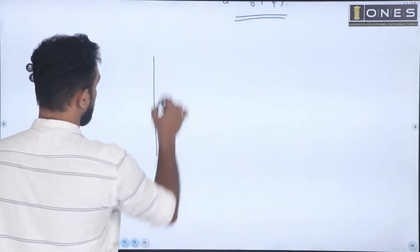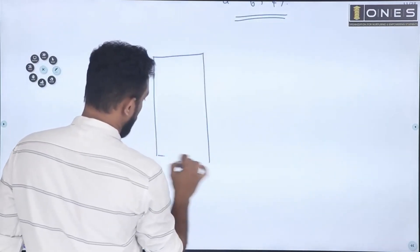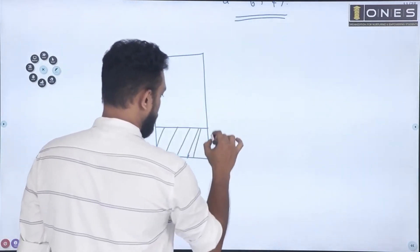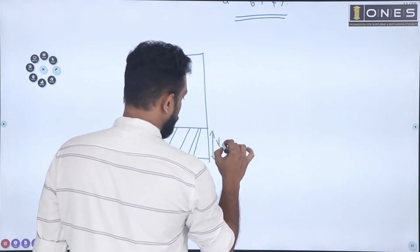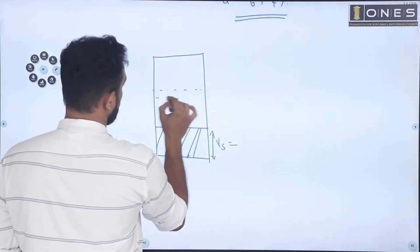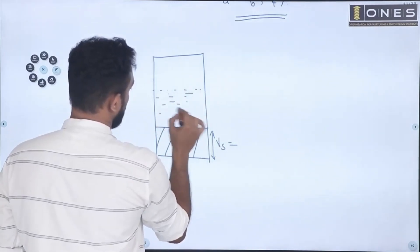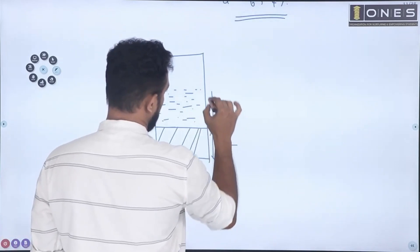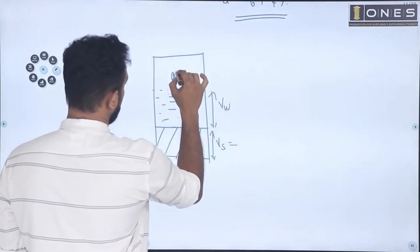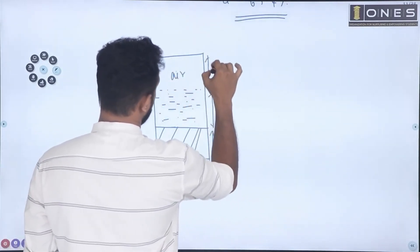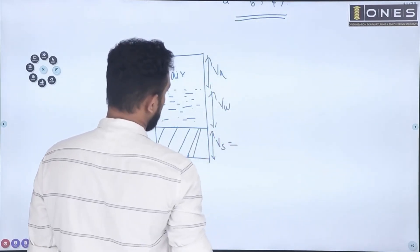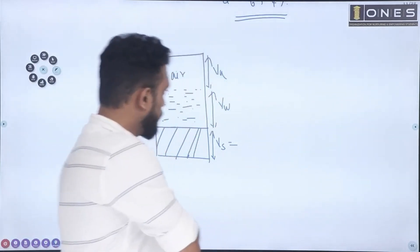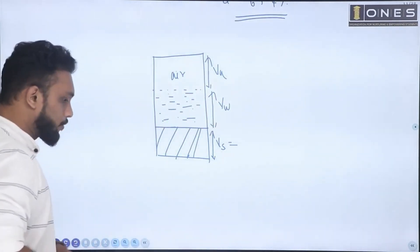Now how do you draw the phase diagram? We draw a diagram showing volume on one side and weight on the other. This portion is the volume of solids, this portion is volume of water, and there is air at the top. You label Vs, Vw, Va separately. We need to find those values. Total volume is 1 meter cube.